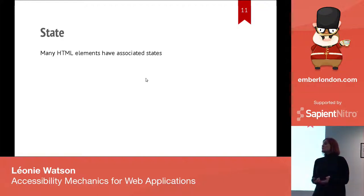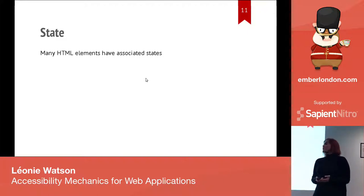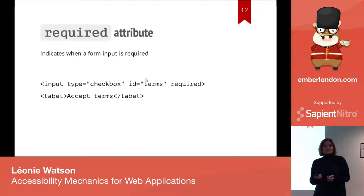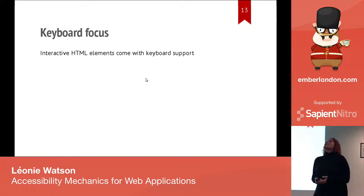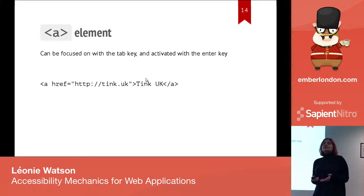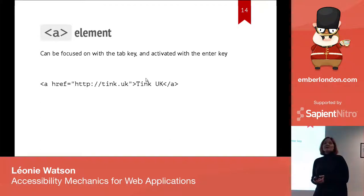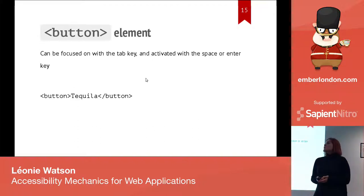You also get information about state if you use HTML. An obvious one is the required attribute on form fields — visually it changes the UI to indicate the field is necessary before the form can be submitted, but programmatically that information is also available to screen readers. You also get keyboard focus for free. If you use an anchor element, the browser automatically makes it tabbable, and knows that hitting Enter will activate the link — you don't have to do anything as a developer. Similarly, a button element can be focused with the keyboard, and the expected interaction is either the space or Enter key. You get that for free by just using the right HTML element.